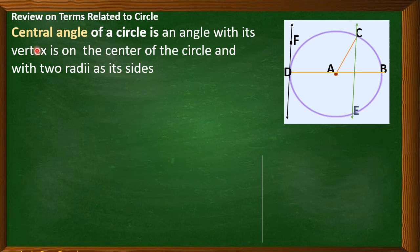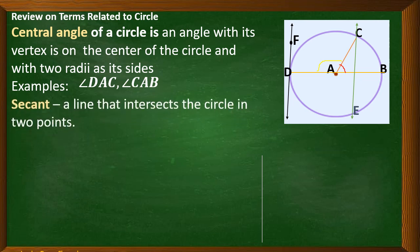Now, let's have the central angle. The central angle of a circle is an angle with its vertex on the center of the circle and with two radii as its sides. Here, we have two central angles. For example, angle DAC. This is the first central angle. Next, angle CAB. This is also the second angle. The first angle is DAC.